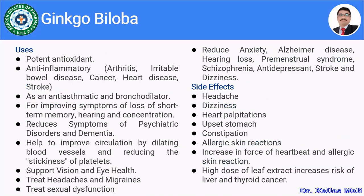The uses of ginkgo biloba include: it is a potent antioxidant, reducing stress induced by chronic diseases like diabetes, cardiovascular disease, and cancer. It acts as an anti-inflammatory in arthritis, irritable bowel disease, cancer, heart disease, and stroke. It is used as an anti-asthmatic and bronchodilator for management of asthma. It improves symptoms of loss of short-term memory, serving as a memory enhancer, and also improves hearing and concentration.